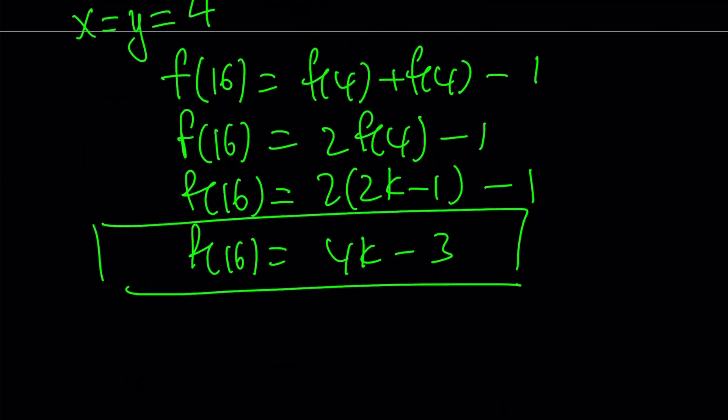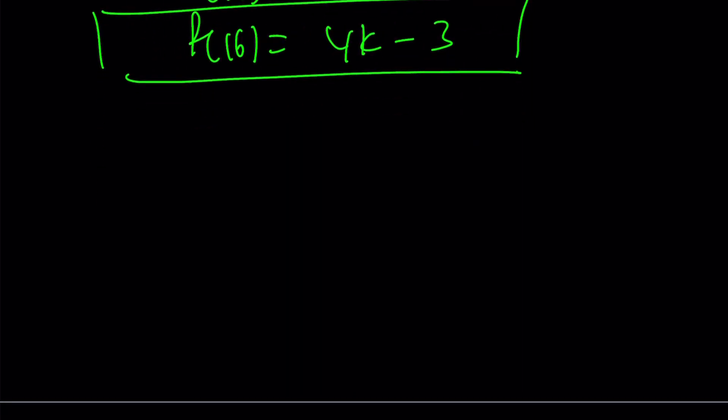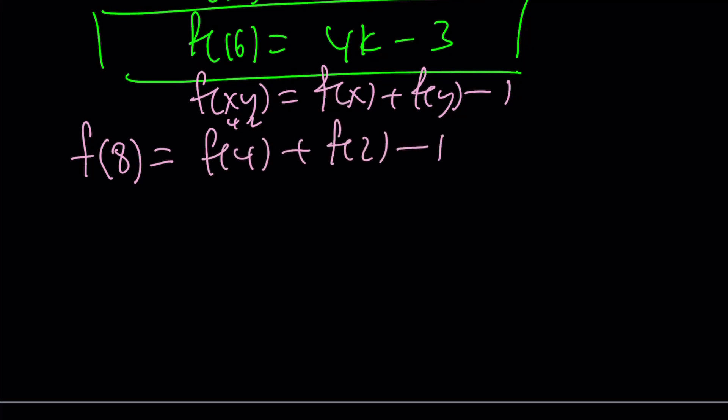But let's go ahead and talk about a couple other things. Can we find f of 8, for example? And the answer is yes. Let me rewrite the equation here. f of xy is f of x plus f of y minus 1. I hope you already memorized it. So now I can use 4 and 2 here, right? f of 4 plus f of 2 minus 1, because I know both of them in terms of k.